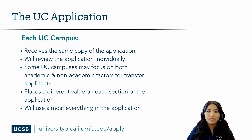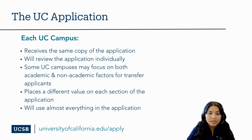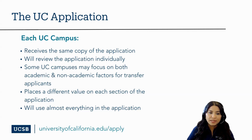Each UC campus that a student has applied to will receive a copy of the same application submitted, but those campuses will review the applications individually. Selection is determined by academic factors such as GPA and coursework, and non-academic factors such as activities, awards, involvements, and leadership experience. Some UC campuses may focus on both academic and non-academic factors for transfer admissions, while others may focus primarily on academics.